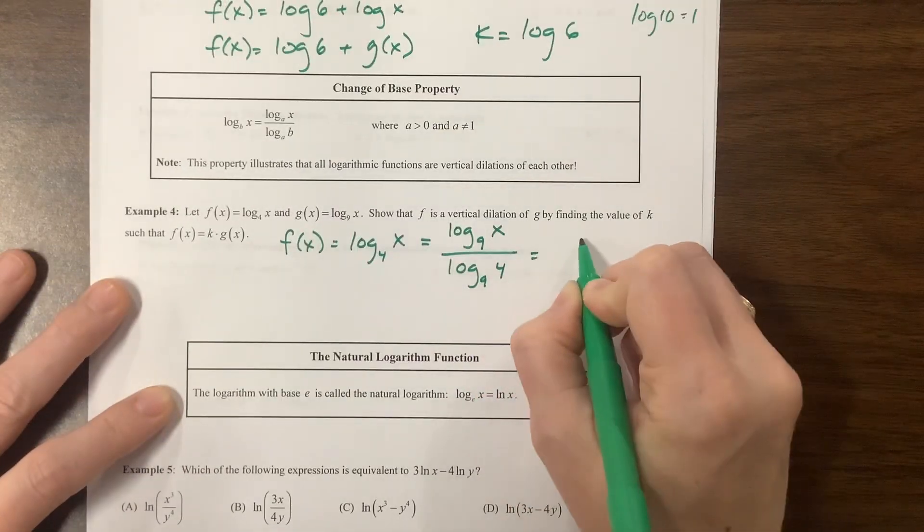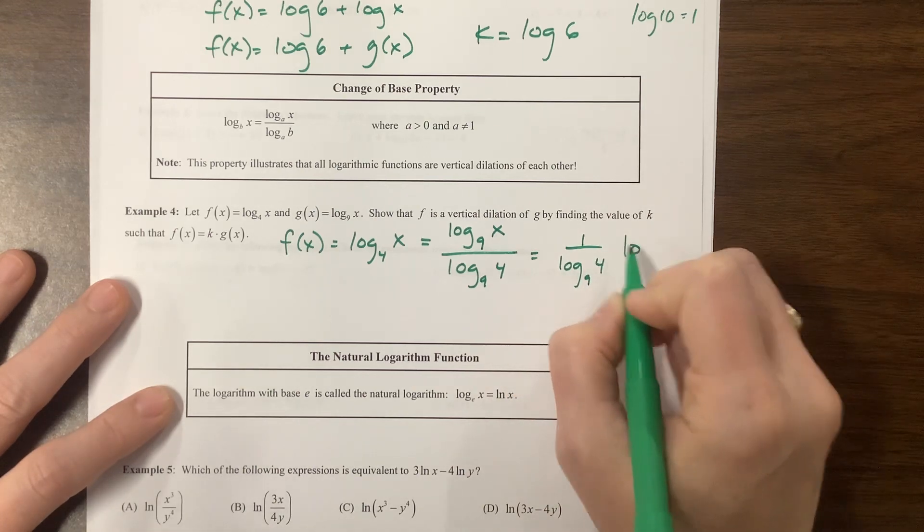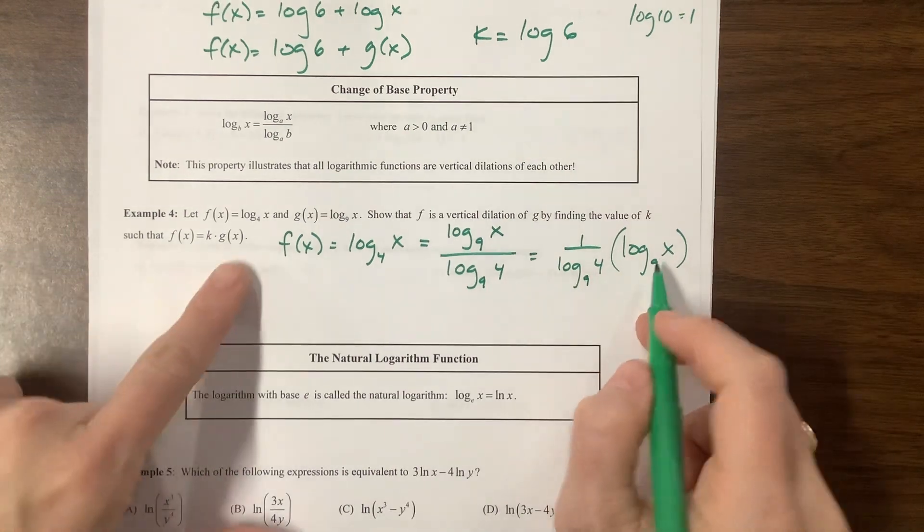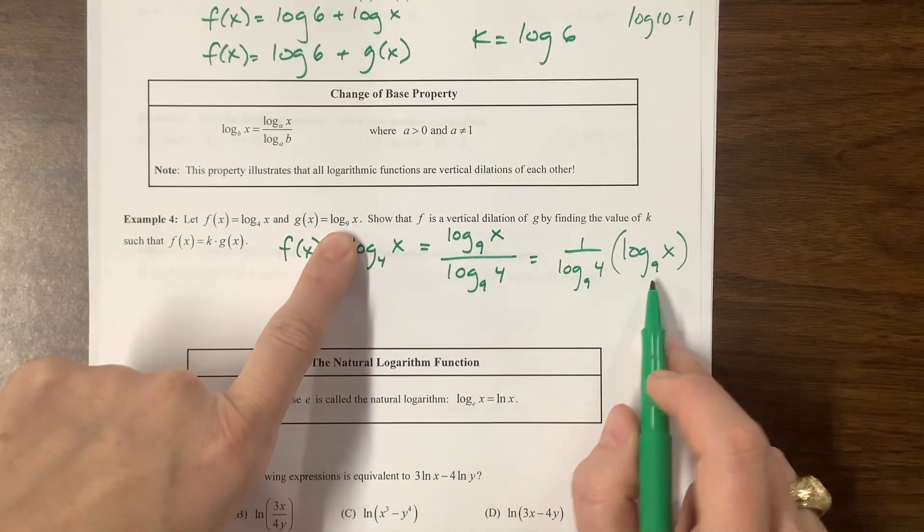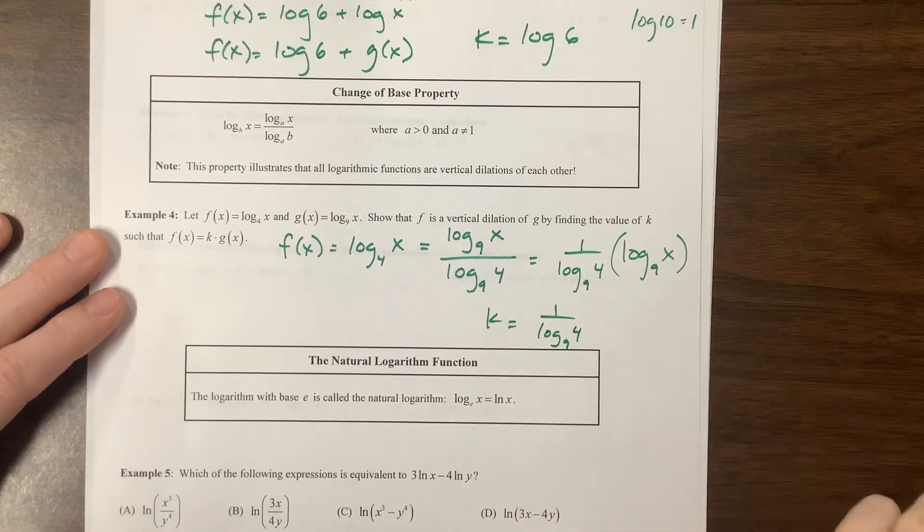So another way to write this is that this is 1 over log base 9 of 4 times log base 9 of x. This is, and this right here was our g of x. So the k value here is 1 over log base 9 of 4.